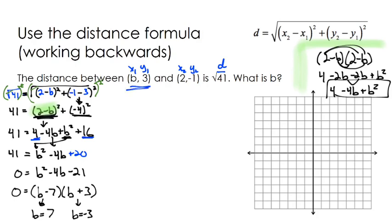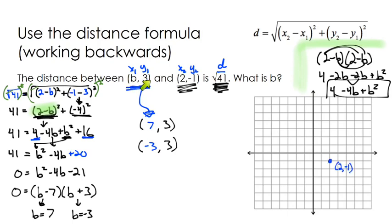That means we have two different ordered pairs that fit the form we want — two points that have a y-coordinate of 3. The first would be 7, 3 and the second would be negative 3, 3, and both of those are that distance away from the given point. Let's represent it graphically. The given point 2, negative 1 is plotted, and we're looking at points of the form b, 3 — points with a y-coordinate of 3, which fall on the horizontal line y equals 3.